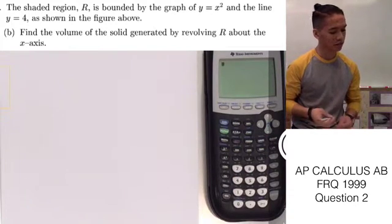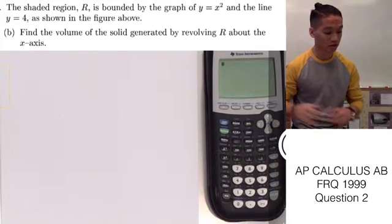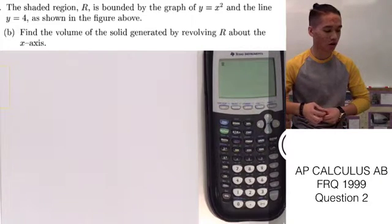Now, what part B says is: find the volume of the solid generated by revolving R about the x-axis.